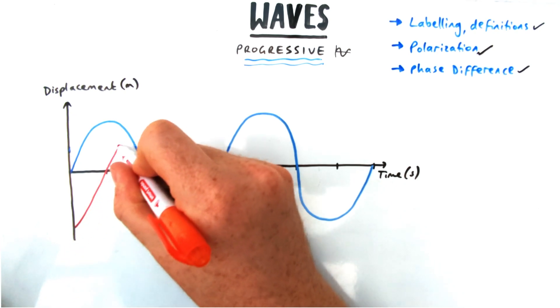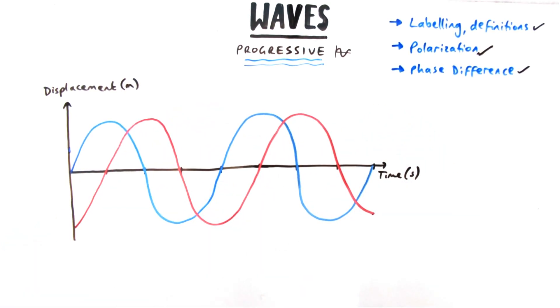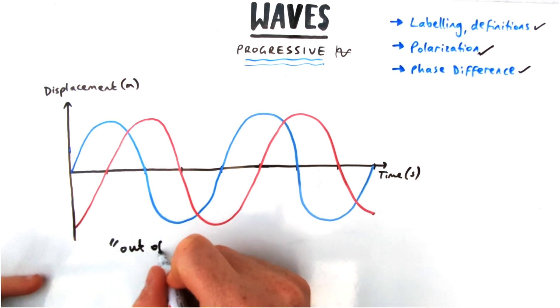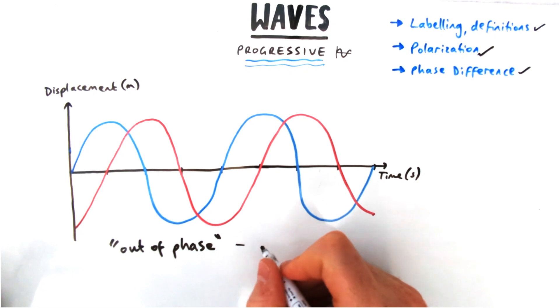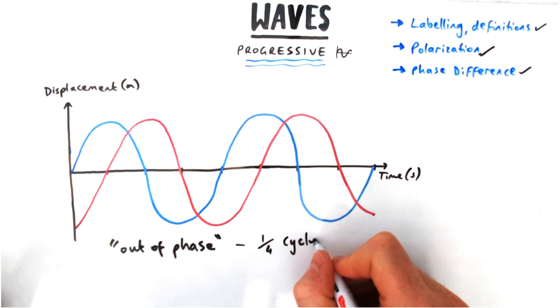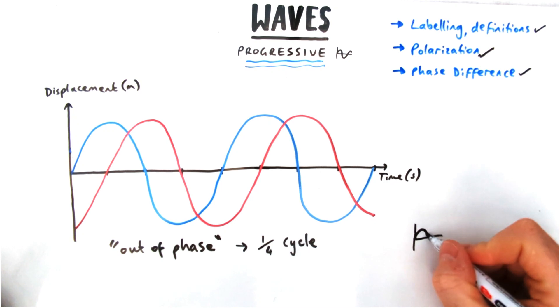This second wave you might notice looks similar to the first wave but it's kind of shifted to the right a little bit. What we say is those two waves are out of phase with each other, and we'll talk about what that means in a second. In terms of how far out they are, out of each of the cycles, hopefully you guys can see it's a quarter of a cycle difference. So it's a quarter of a wave before one starts.